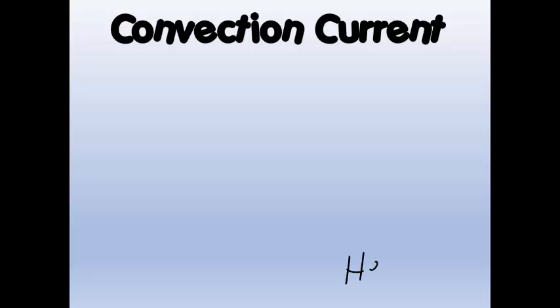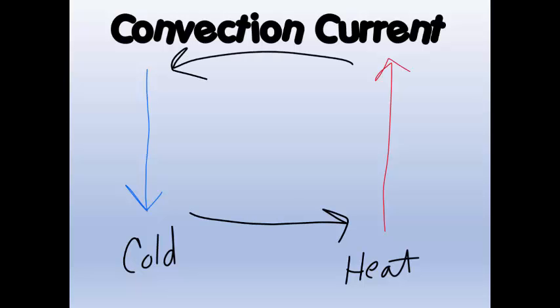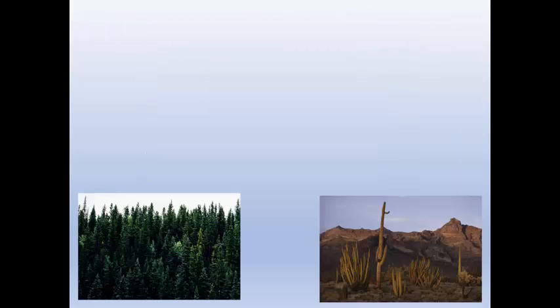In convection currents, let's say we had a heat source right here and a cold area right here. We know that above the hot area the air is going to rise, and it's going to fall by the cold area, and then we're going to complete this convection current. We could talk about it being responsible for plate tectonics — we see them in the ocean, we see it in the air — but here we're talking about how it affects our weather.